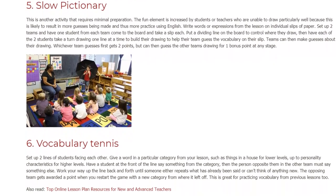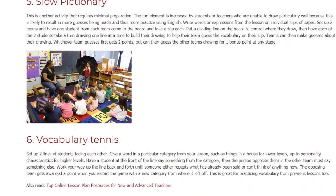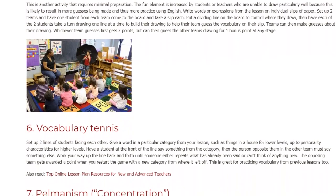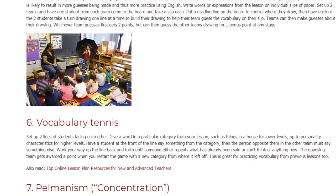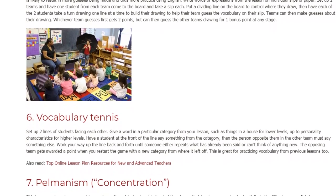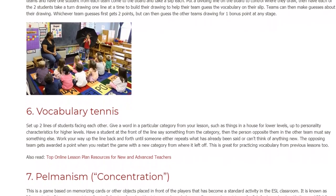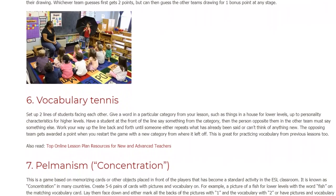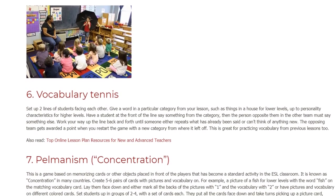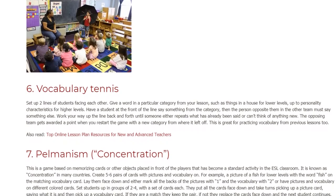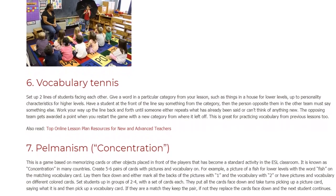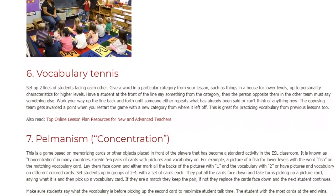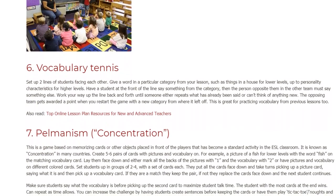6. Vocabulary Tennis. Set up two lines of students facing each other. Give a word in a particular category from your lesson, such as 'things in a house' for lower levels, up to 'personality characteristics' for higher levels. Have a student at the front of the line say something from the category, then the person opposite them on the other team must say something else. Work your way up the line back and forth until someone either repeats what has already been said or can't think of anything new. The opposing team gets awarded a point and you restart the game with a new category from where it left off. This is great for practicing vocabulary from previous lessons too.